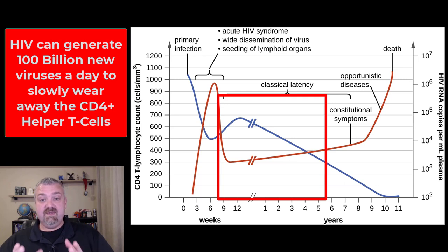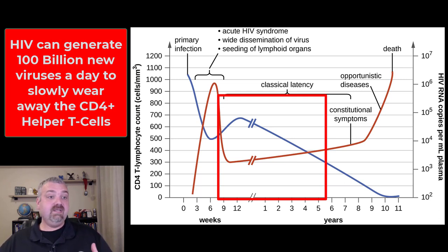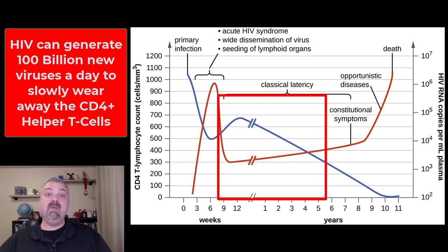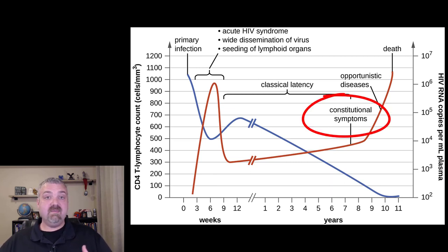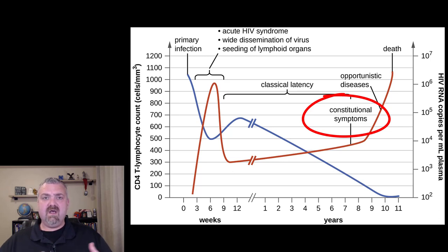During phase two — what they call classic latency — you're just seeing that you have a weaker immune system than you should. Reaching the end of that phase, you're going to start to see what are known as constitutional symptoms. Those are things that affect the entire body: fever, night sweats, chills, weight loss — these types of things.